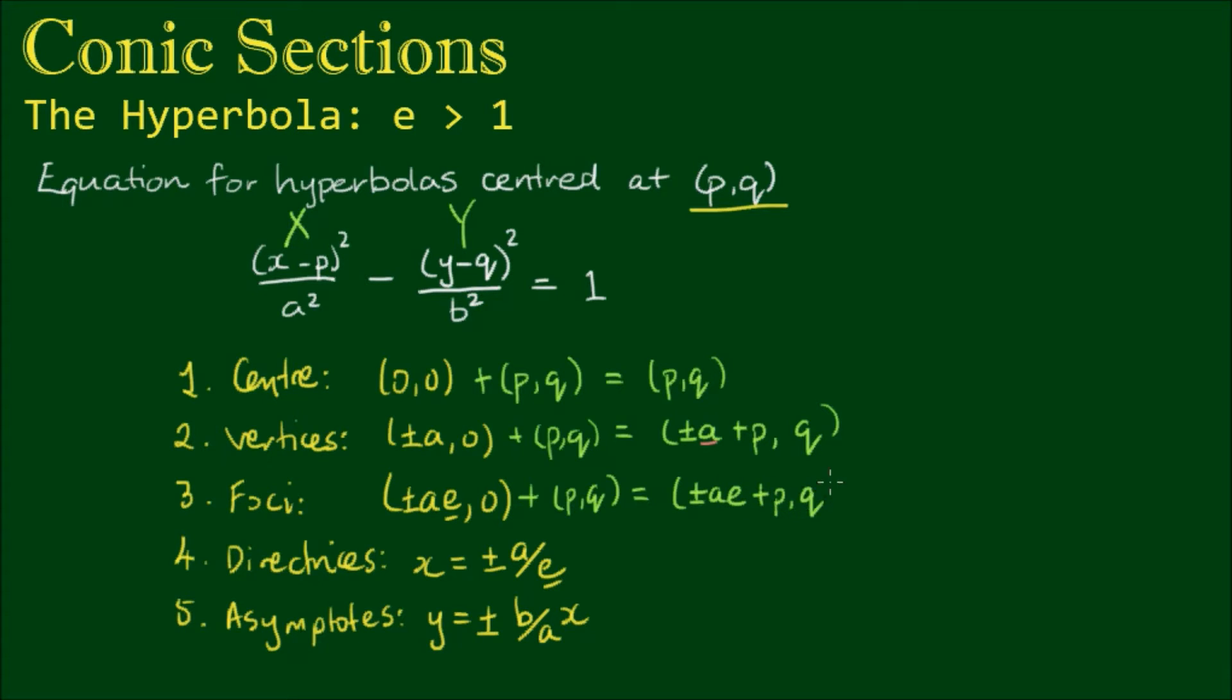The same applies to the focal points where they are still located at ±ae to either side of the center point. For the directrices, because these are infinitely long vertical lines, we don't need to consider the y-coordinate. So these are simply offset by p.